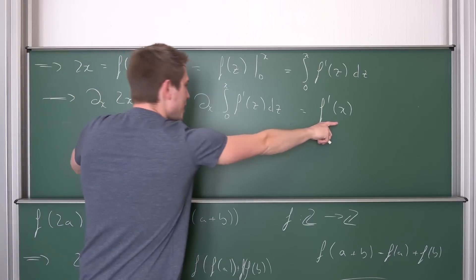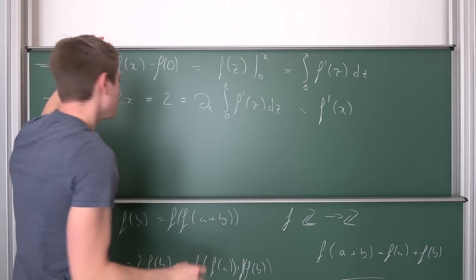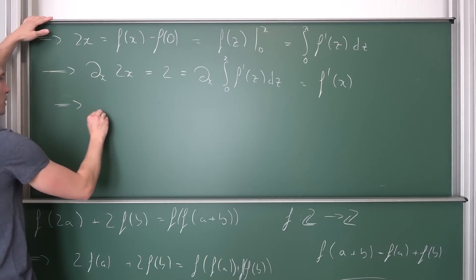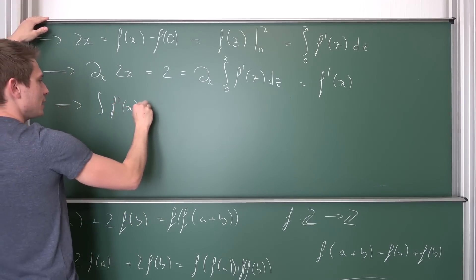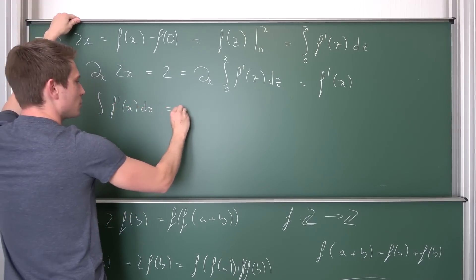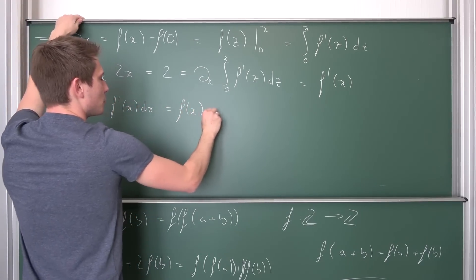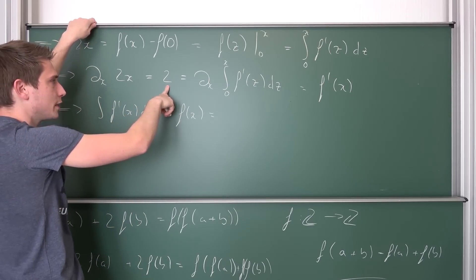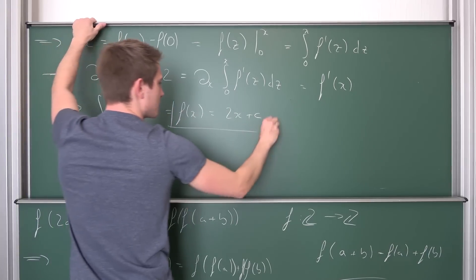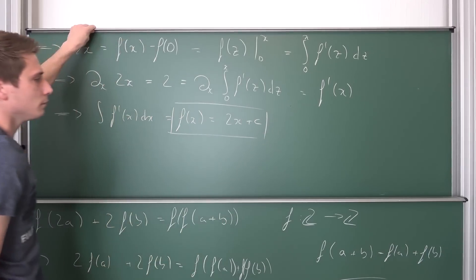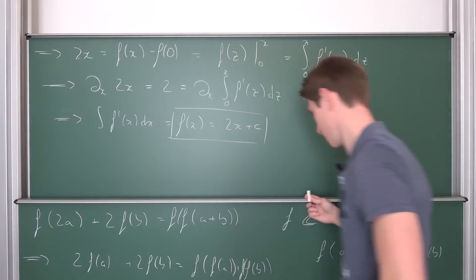Now f'(x) is equal to 2. If we were to integrate both sides indefinitely, f'(x) integrated with respect to x is going to give us f(x), which is just the integral of this thing. So 2x plus some arbitrary constant c.